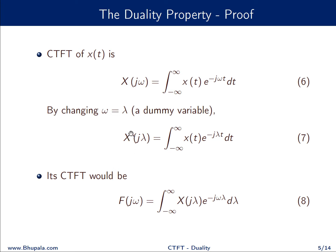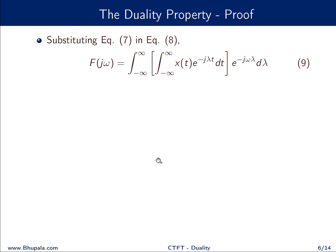Now we will take the Fourier transform of this new function X(jλ), which is a complex function. Let it be defined as F(jω), which is the integral from minus infinity to infinity of X(jλ) e^(−jωλ) dλ. The next step is the substitution of equation 7 into equation 8, giving us a new equation.